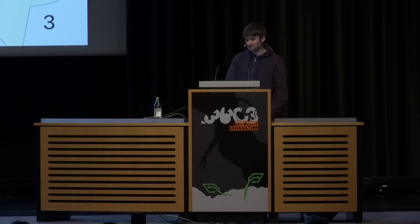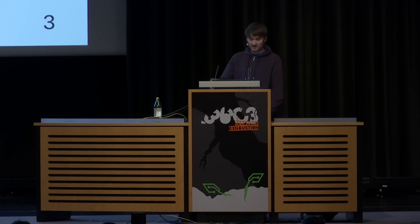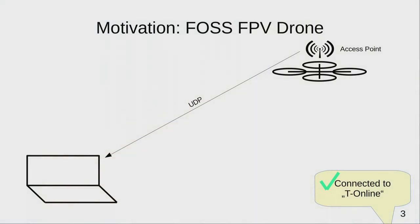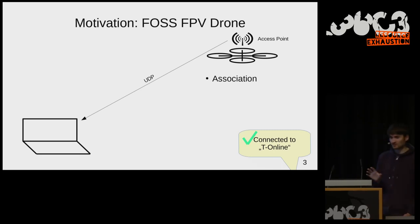You might think Wi-Fi usually automatically reconnects, which is true. It might help — or might not. You can go shopping for parts for a second drone because your first one will have already crashed. In summary, a stateful association-based connection is something you do not want in this application, and that's a fundamental problem with standard Wi-Fi.